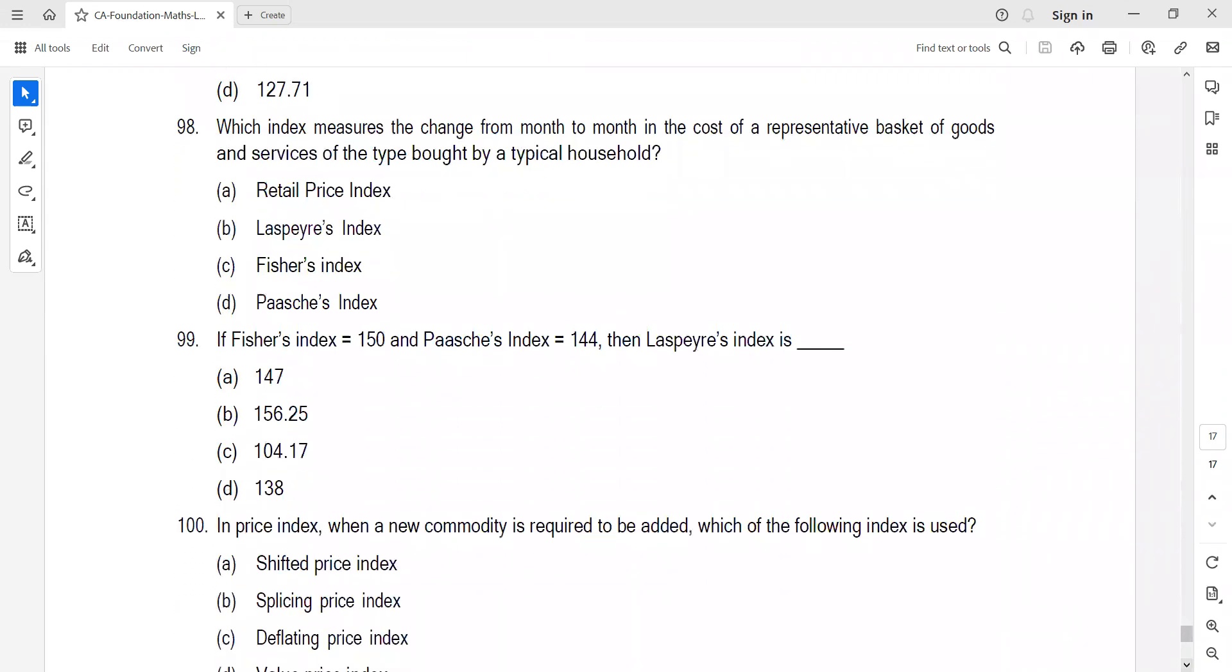Question 98: Which index measures change month to month in cost of representative basket? It's retail price index. Question 99: Fisher is given, Paasche is given, find Laspeyres. Fisher is geometric mean of Laspeyres and Paasche. So 150 squared equals Laspeyres into 144. Solving, Laspeyres is 156.25. Answer is B.